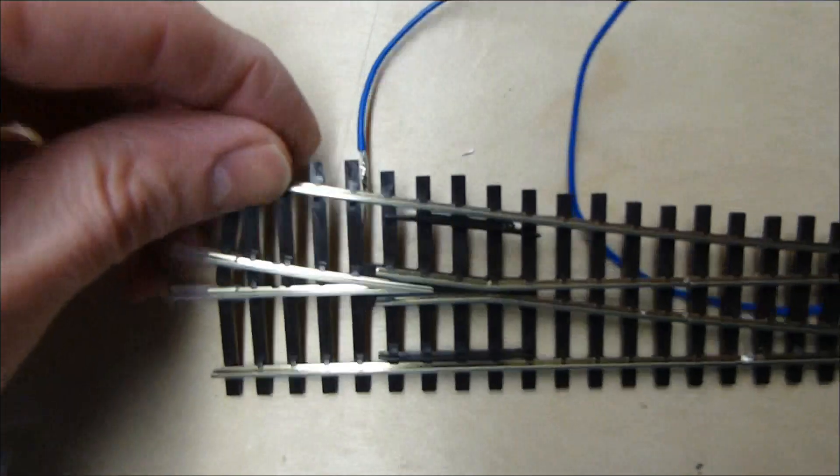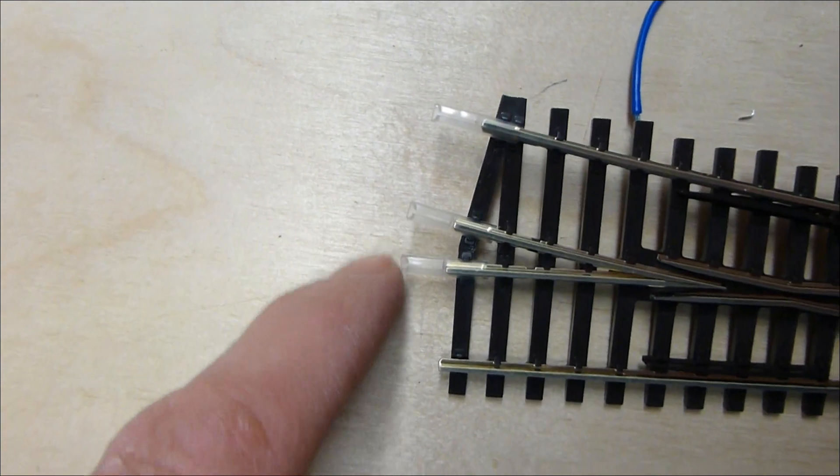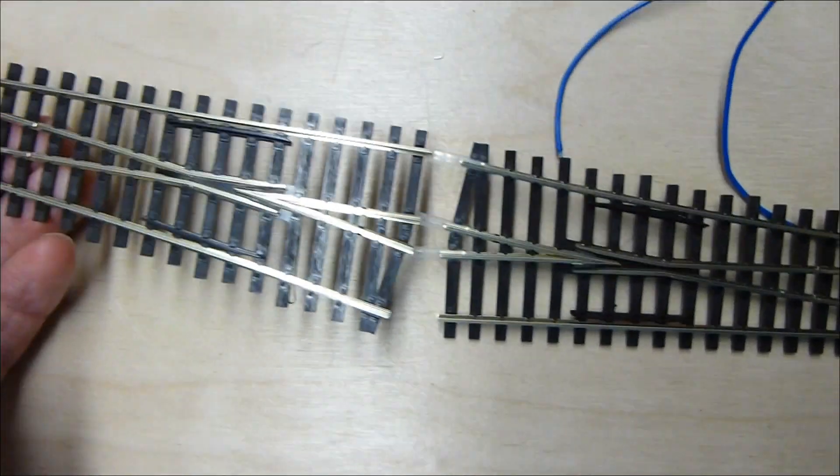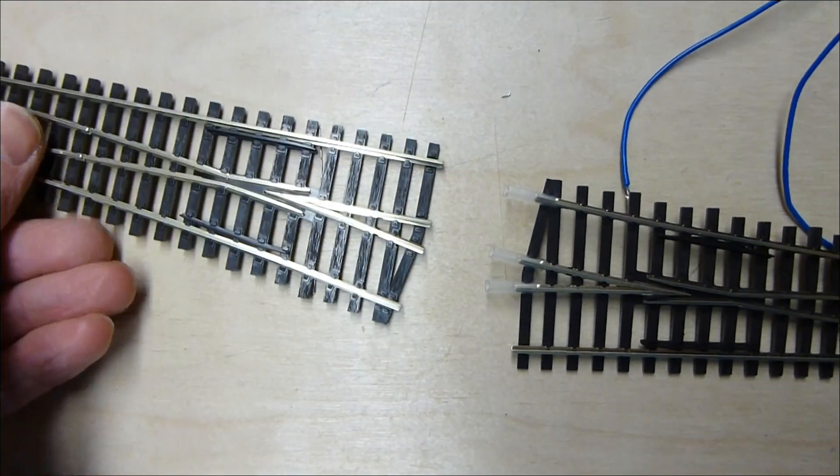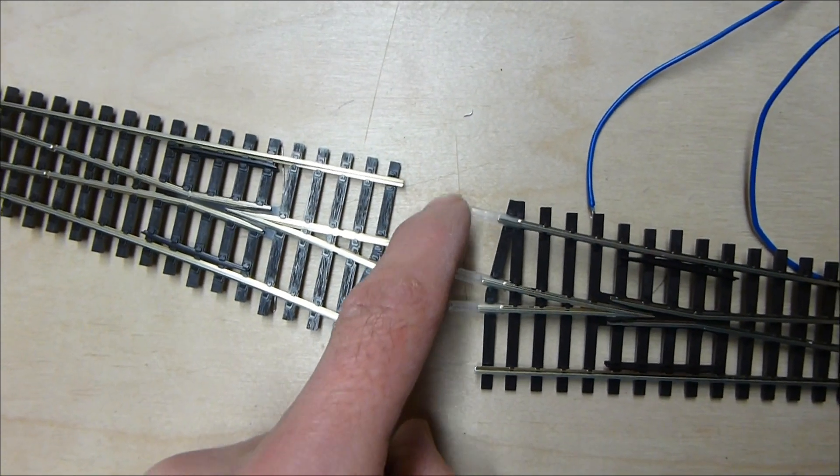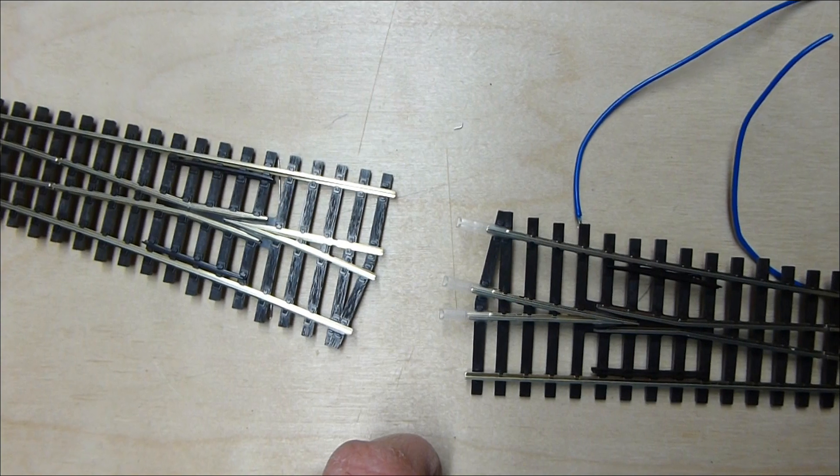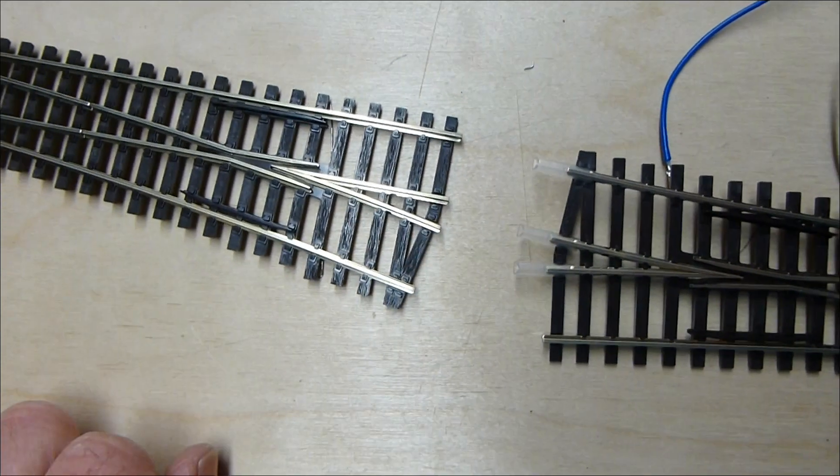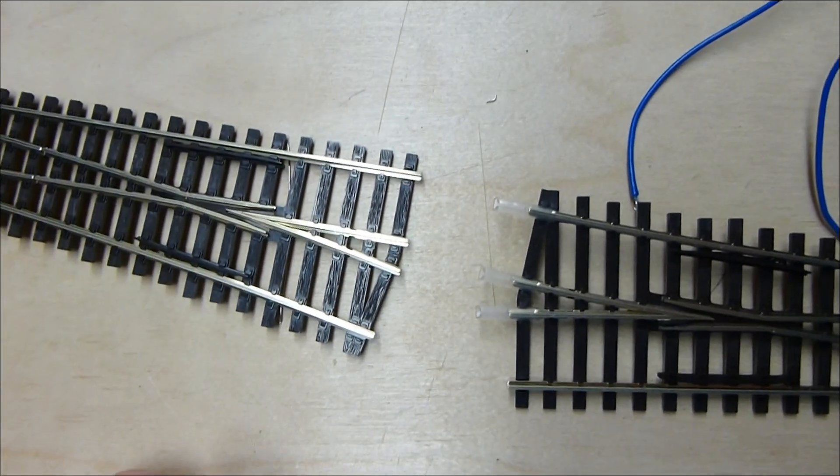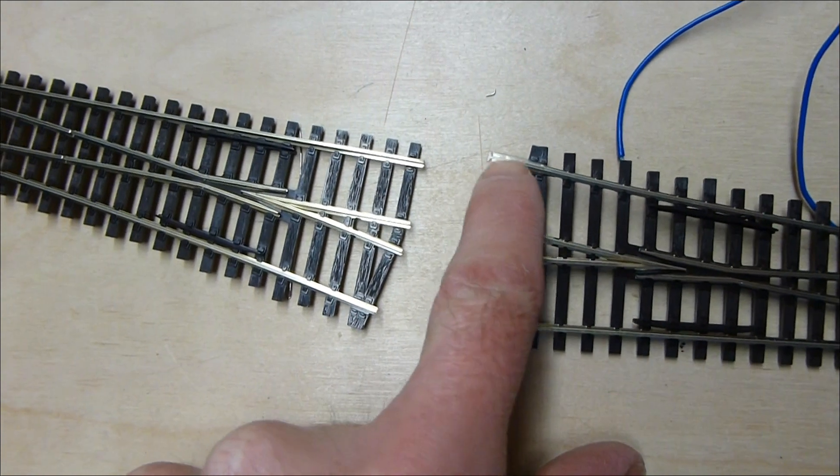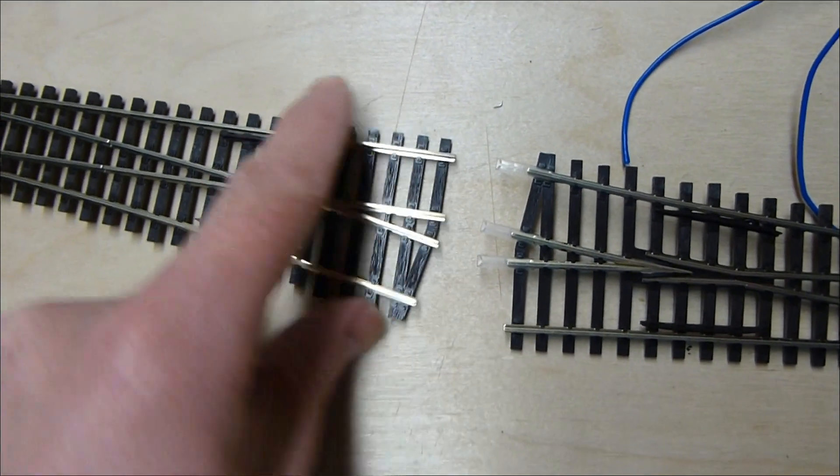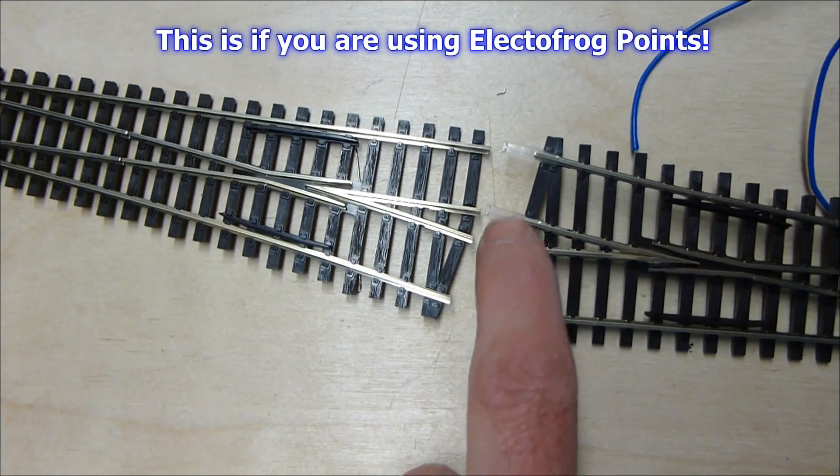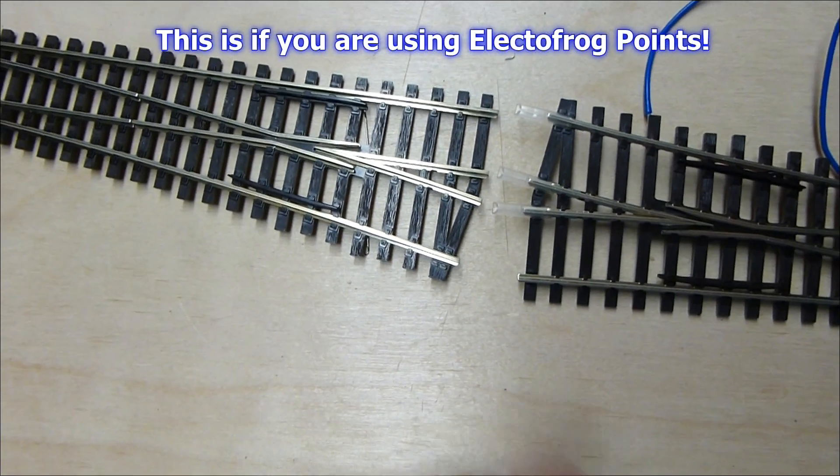And I've also, if I turn it back over, fitted insulated fish plates there, there, and there. Now, if you've got points, as I am in this case, facing each other, it is required to break those two links. I just do that for safety to stop shorts, and that's the best way for doing it. If you've just got a branch line branching off, you do not need that one. But if you're having points facing each other, as per the instructions, you need them there and there, and you always need them at the frog anyway.